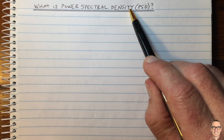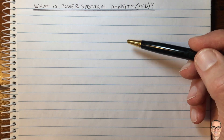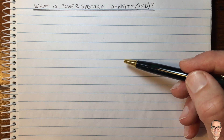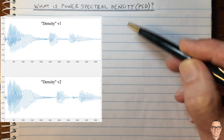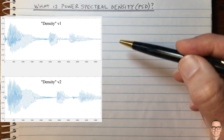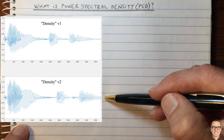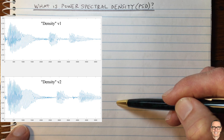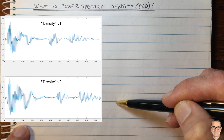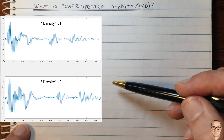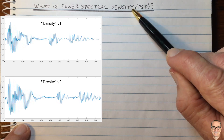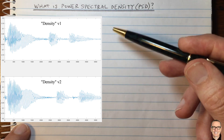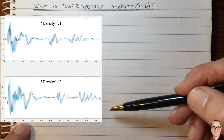What is power spectral density? We're going to look at an example, then some maths, and then a couple more examples at the end. Here is an example of my voice recorded saying the word 'density,' and I've recorded it twice. You can see that these waveforms are not the same — they are different waveforms because they are random processes. We're very much interested in characterizing random processes mathematically, and one thing we'd be interested in is their spectral content — the spectral density. So how do we go about doing that for these signals?